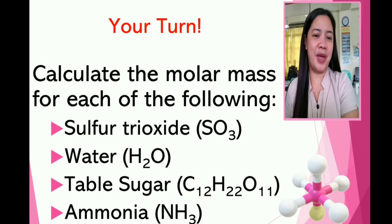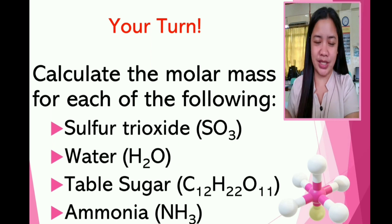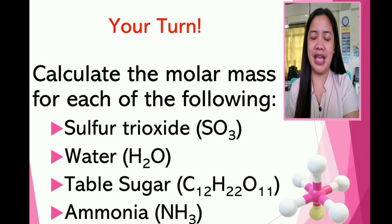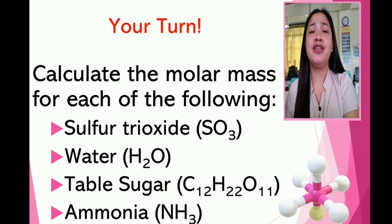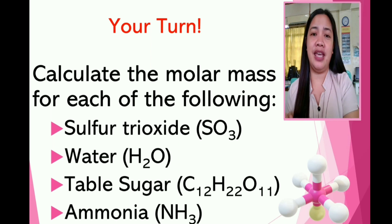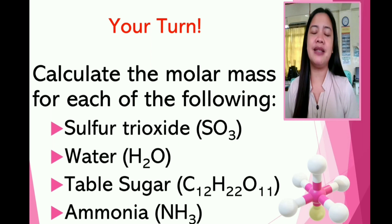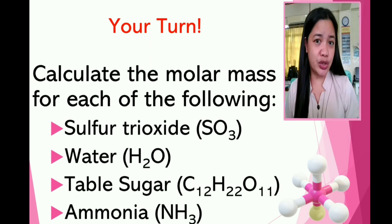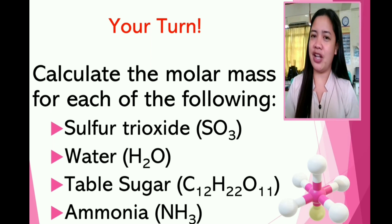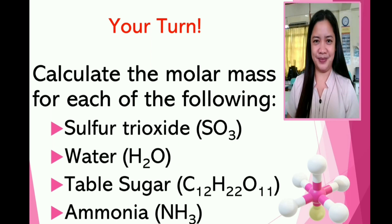Now it's your turn. You have to calculate the molar mass for each of the following substances: sulfur trioxide, water, table sugar, and ammonia. The chemical formulas are all given on the screen. Go back to your LMS course and answer the given problems. Review and follow the steps in calculating the molar mass, then submit your solutions with answers. Do not forget to use your periodic table of elements, scientific calculator, and your science journal. Enjoy!